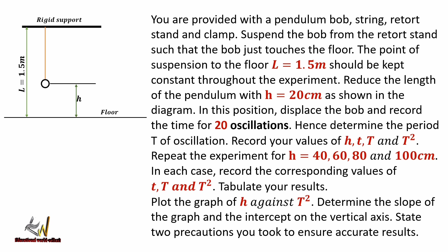Reduce the length of the pendulum with h equal to 20 centimeters. As shown in the diagram, displace the bulb and record the time for 20 oscillations, then determine the period of oscillation. Record your values of h, t, the period, and the square of the period. Repeat the experiment for h values of 40, 60, 80, and 100 centimeters. Tabulate your results, plot the graph of h against T-squared, determine the slope and the intercept on the vertical axis, and state two precautions you took to ensure accurate results.